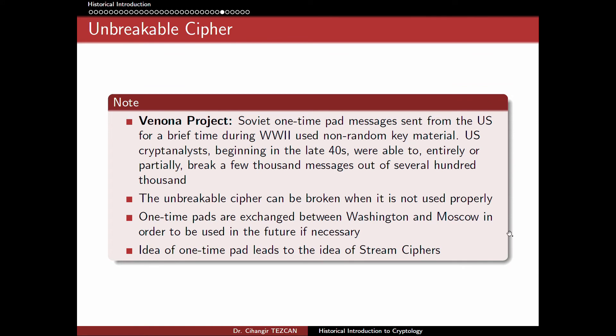There are historical examples of this. For instance, the Venona project was a project of the United States. Soviet one-time pad messages sent from the US for a brief time during World War II used non-random key material. US cryptanalysts beginning in the late 1940s were able to entirely or partially break a few thousand messages out of several hundred thousand. This means that even if a cipher is unbreakable in theory, it can be broken when not used properly.